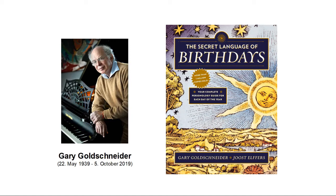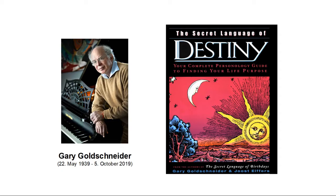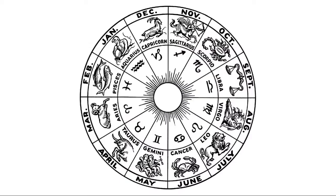Since that system is crucial for all of his books, they are also described in the other books that are part of his Secret Language series, which are The Secret Language of Destiny and The Secret Language of Relationships.